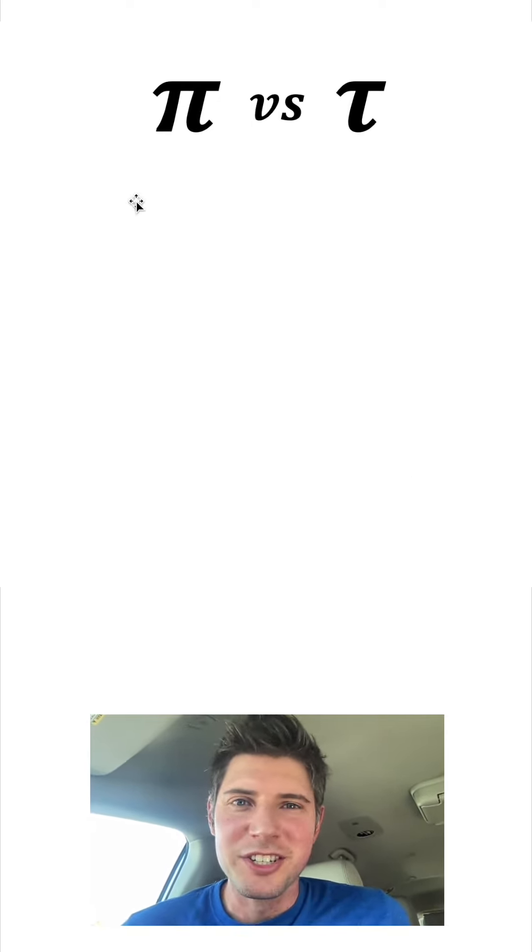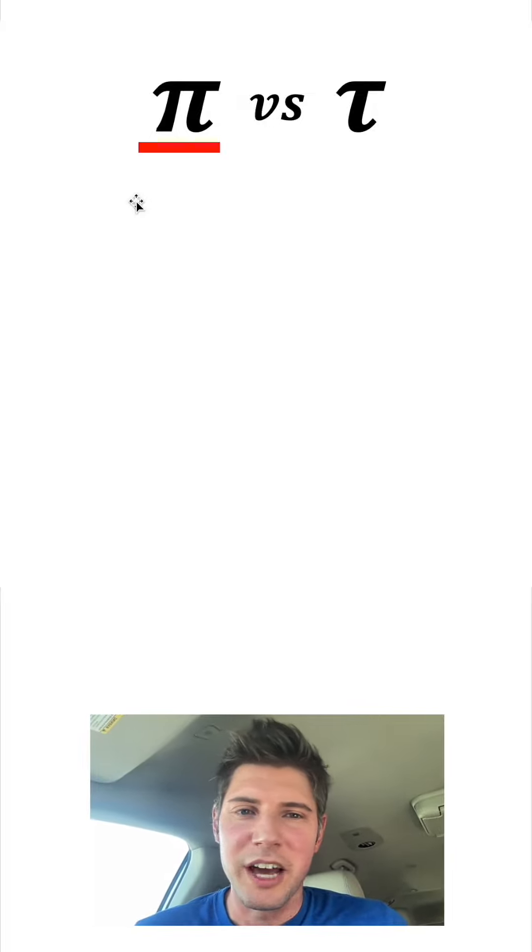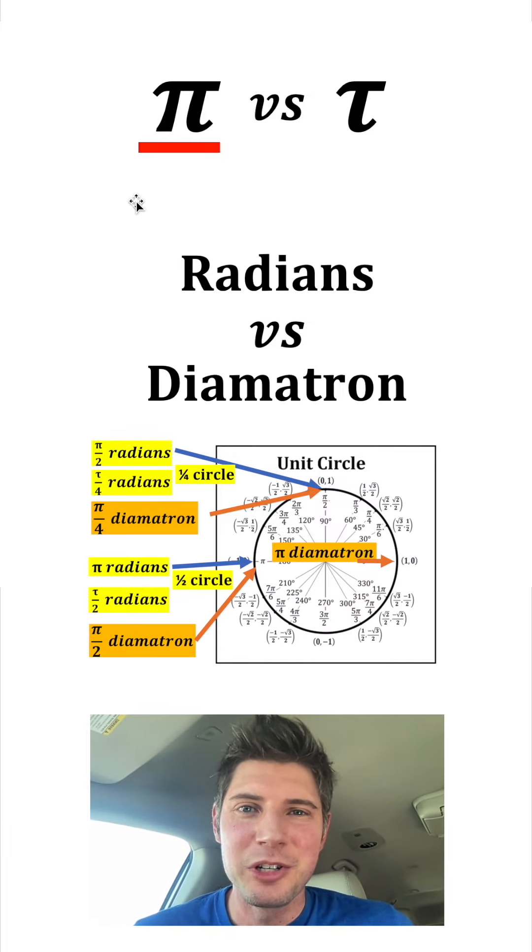Ultimately, in the debate of pi versus tau, I think pi is going to win just because we've been doing it for thousands of years. That's just a standard in math today. But I have a new proposal. What about radians versus diametron?